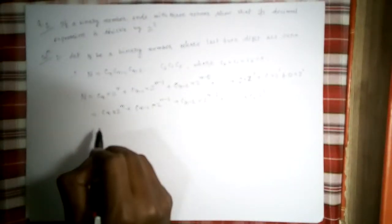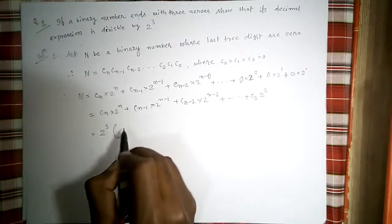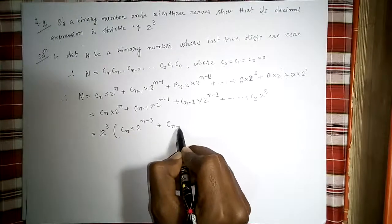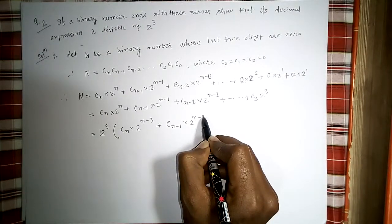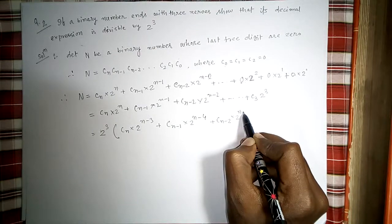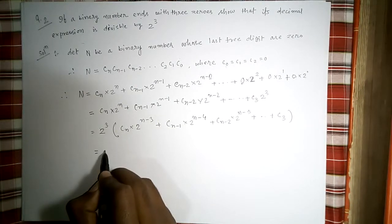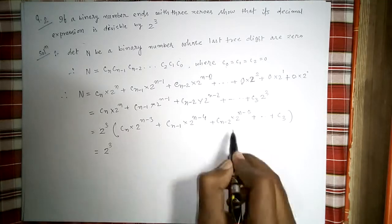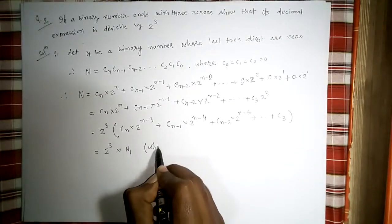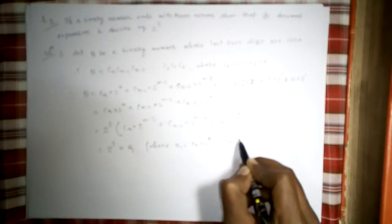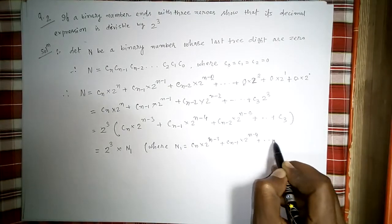From all the remaining terms we can take 2^3 as a common factor. What remains is: c_n · 2^(n-3) + c_(n-1) · 2^(n-4) + c_(n-2) · 2^(n-5) + ... + c_3. We can write all of this as n₁, where n₁ = c_n · 2^(n-3) + c_(n-1) · 2^(n-4) + ... + c_3.